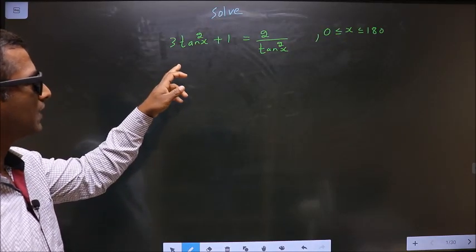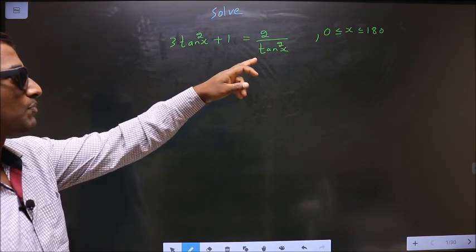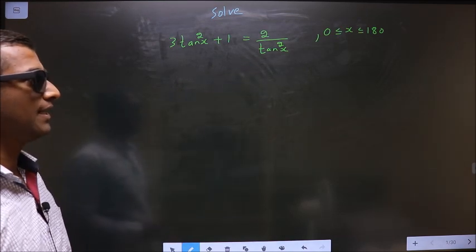Solve 3 tan square x plus 1 equal to 2 by tan square x where x lies between 0 to 180 degrees.